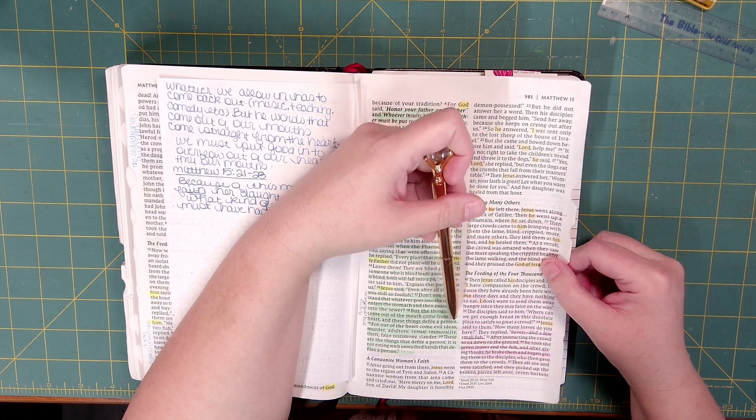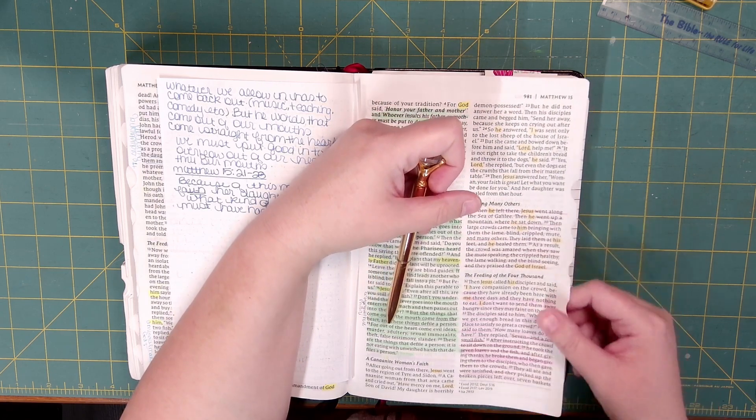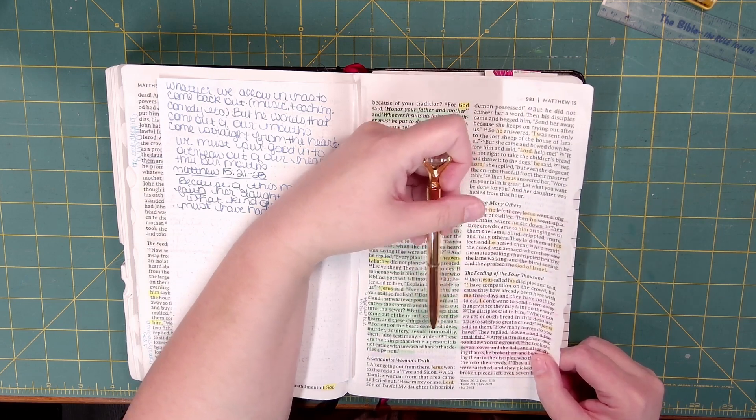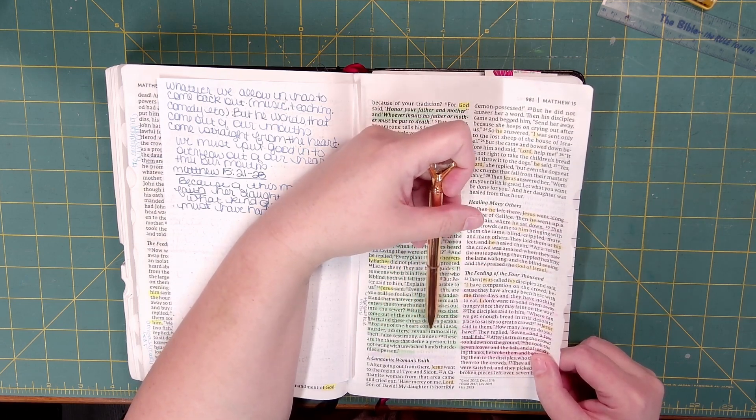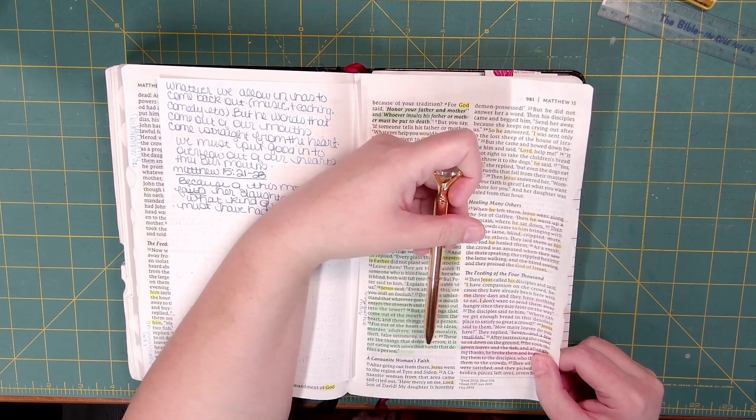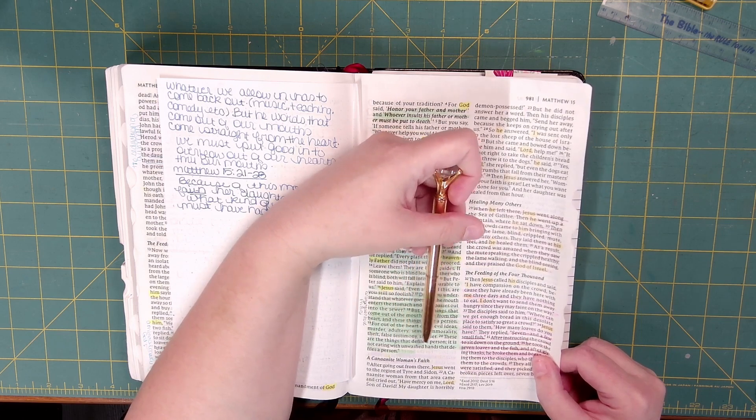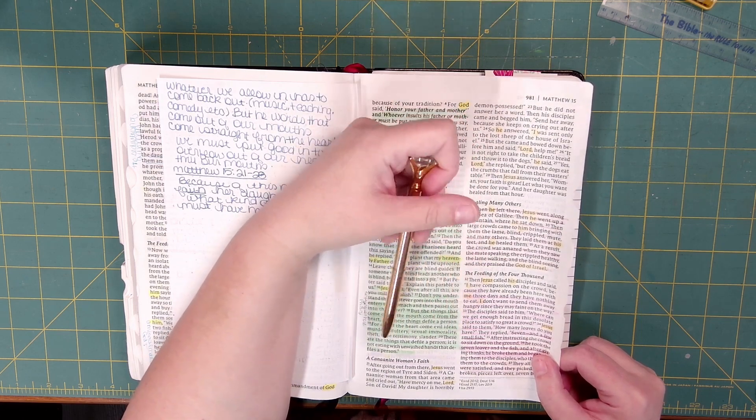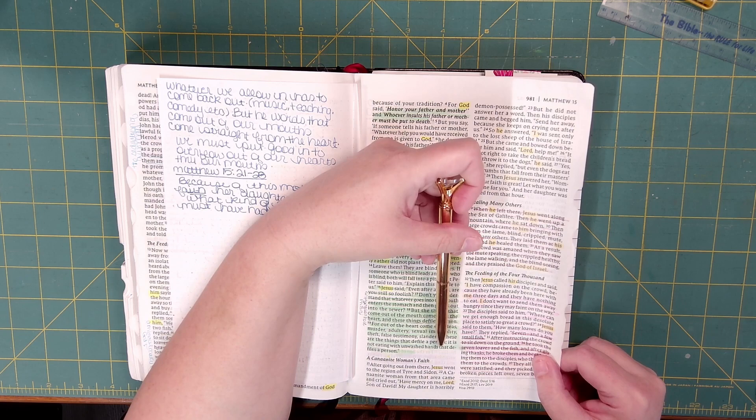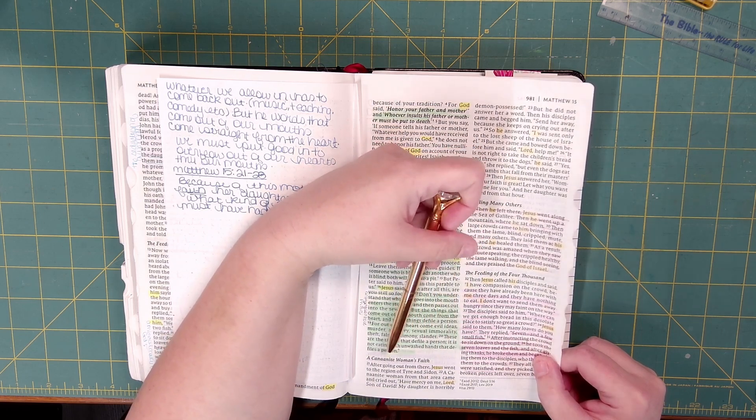But the things that come out of the mouth come from the heart, and these things defile a person. For out of the heart comes evil ideas, murder, adultery, sexual immorality, theft, false testimony, slander. These are the things that defile a person. It is not eating with unwashed hands that defile a person.